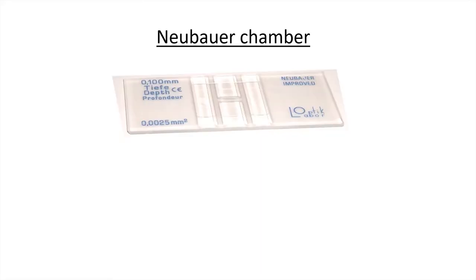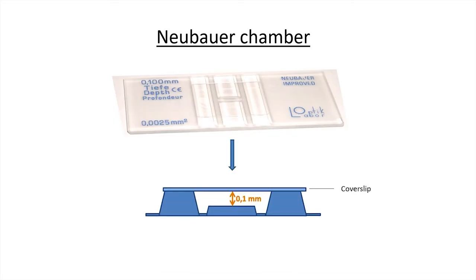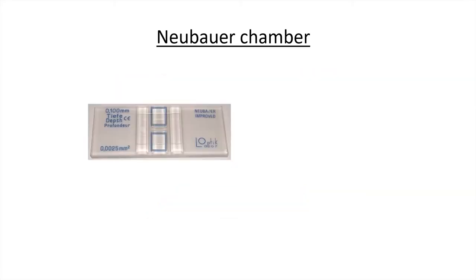The height of the lateral zone of the chamber differs by 0.1 millimeters in height from the central zone. So if we look at the chamber in profile, we will detect this difference in height. An important fact to take into account when calculating the number of cells.